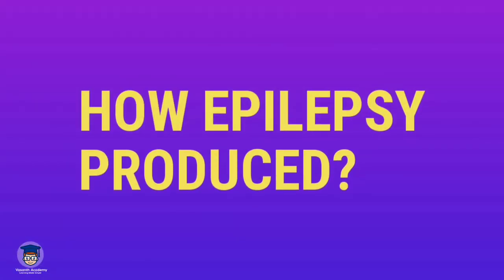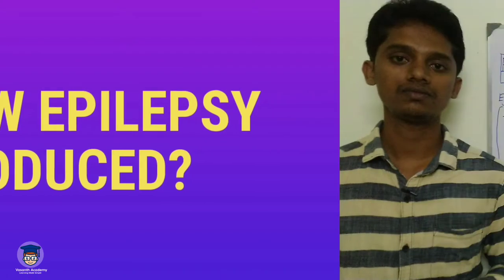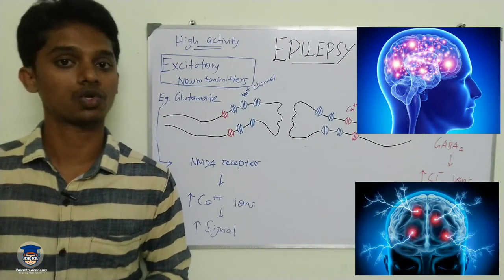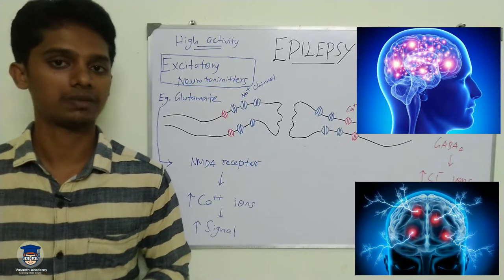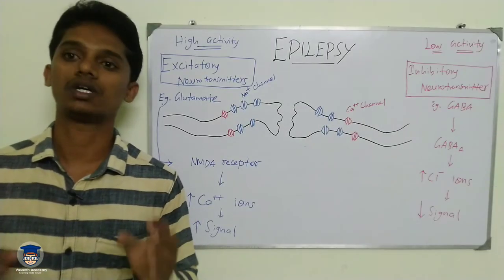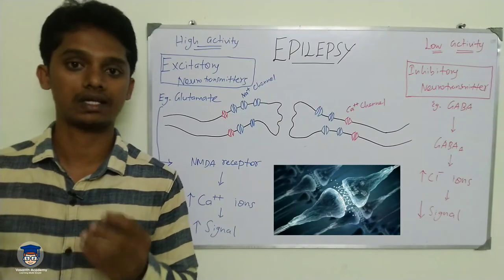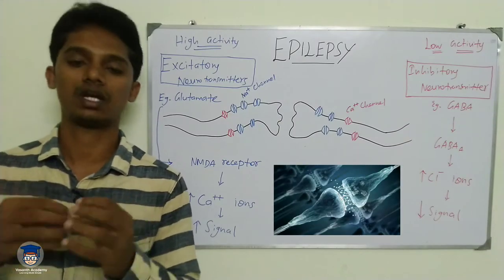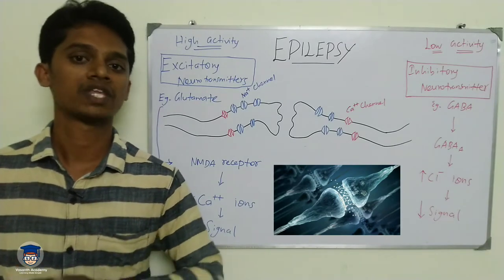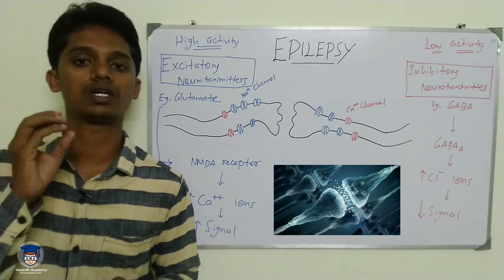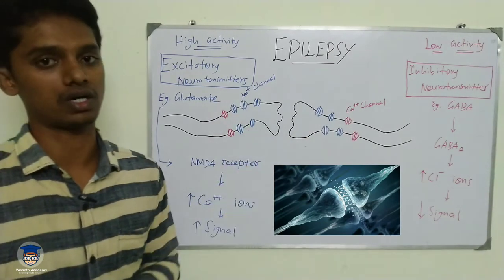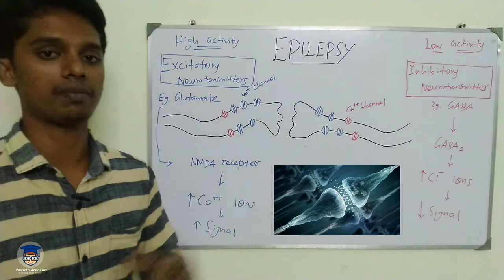Why does epilepsy occur? In the brain, there is a lot of neuronal activity. Neurons are interconnected, forming a chain formation throughout the brain. Messages are passed from one neuron to another neuron, finally reaching the brain. So in neuronal activity, messages are passed between interconnected neurons in a chain.